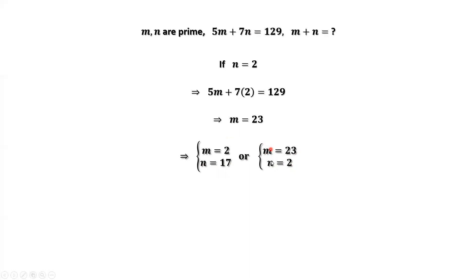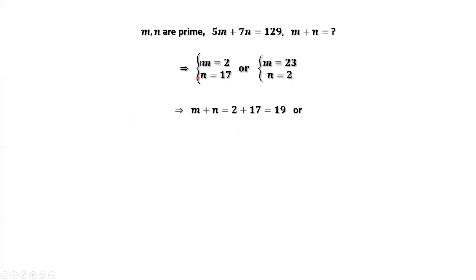Based on these two solutions, we can calculate the sum of m plus n. For the first result, we replace m by 2, n by 17. We have m plus n equals 19. If we use the second solution, we replace m by 23, n by 2. Then we have m plus n equals 25.